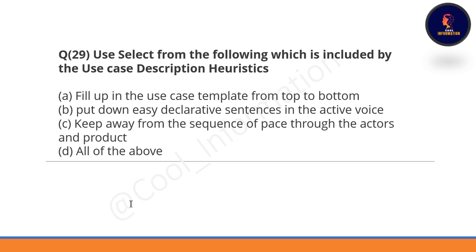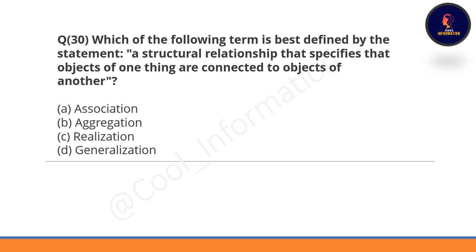Question 29: Which of the following is included in a use case description? Option D is correct — all of the above. Question 30: Which term is best defined by 'a structural relationship that specifies that objects of one thing are connected to objects of another'? Association is the correct option.